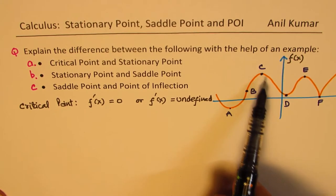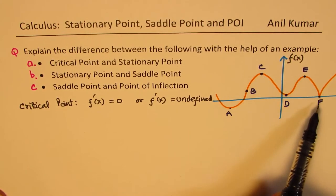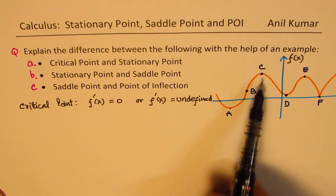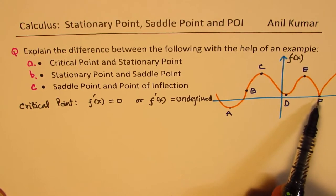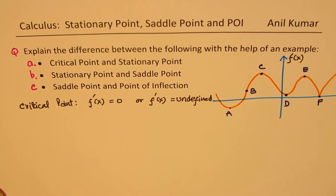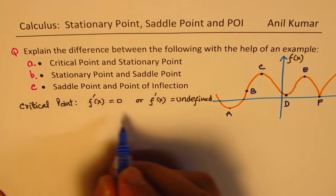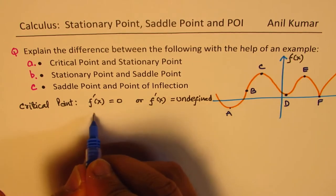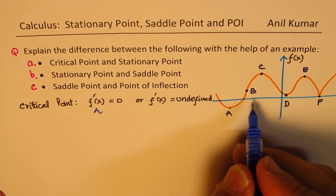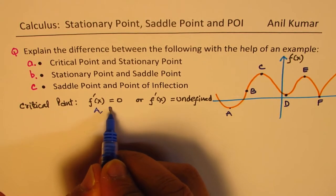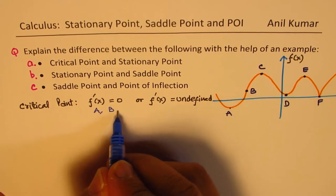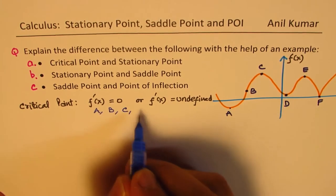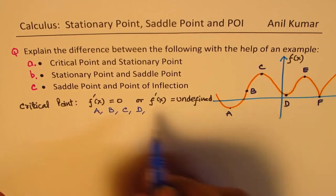The derivative for this graph will be zero at A, C, D, and E, and will be undefined at F. Therefore, for critical points out of this curve, we have the points A, B, C, D, E, and F.